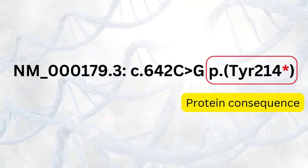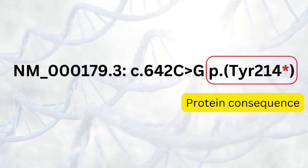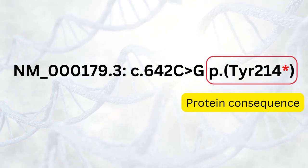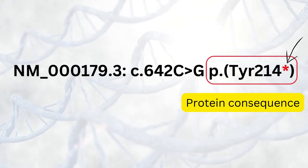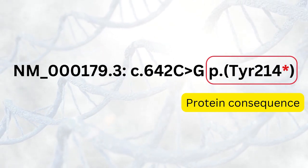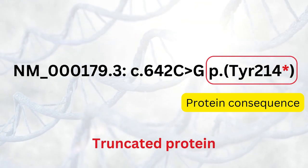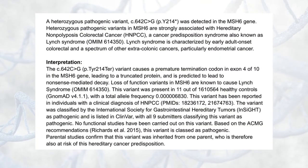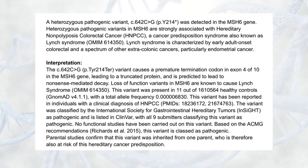The third part is the protein consequence. Based on our knowledge of the genetic code, we can predict the consequence of a variant on the protein. Looking back at the transcript, we see that this variant changes a C to a G in this codon, which results in a stop codon instead of a tyrosine. Therefore, this variant is predicted to lead to a truncated protein. Note that the protein consequence is only present if the variant occurs in a coding region.